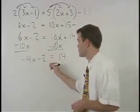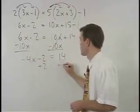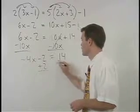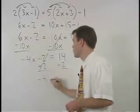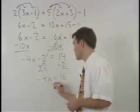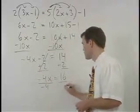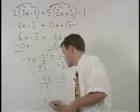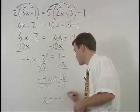Add 2 to both sides, and we have negative 4x equals 16. Divide both sides by negative 4, and x equals negative 4.